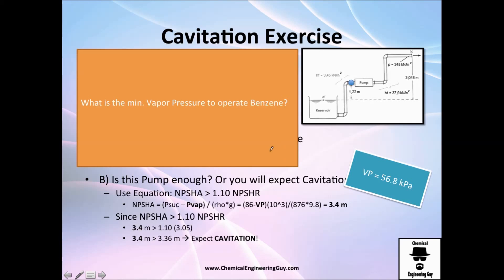One last exercise: What is the minimum vapor pressure to operate benzene? Recall that for benzene we got a vapor pressure of, we don't know it, that's what actually we want to know. But we got the density, yes. The gravity, yes. The suction line, yes. This is constant. And we know that the minimum that we need to have is 3.36, which rounding up is 3.4 meters. So this will be the minimum. We just need to solve for vapor pressure. And solving for vapor pressure, I got that the minimum vapor pressure you need is 56.8.